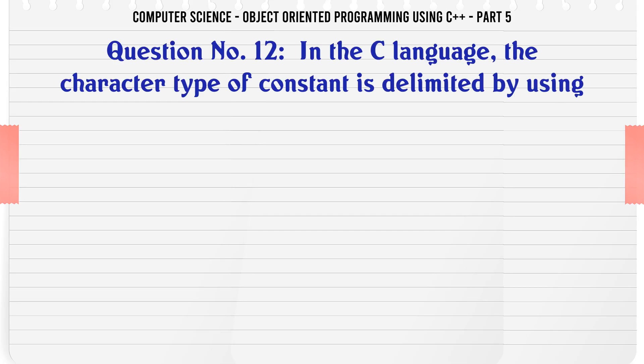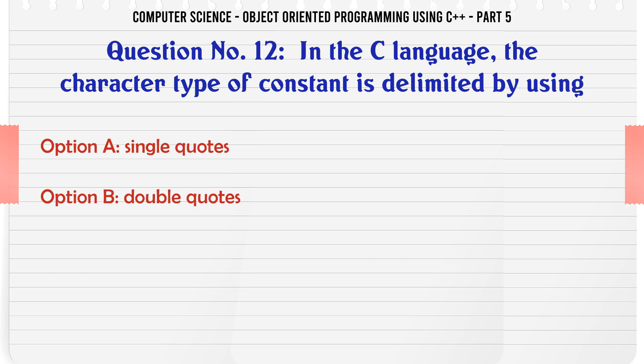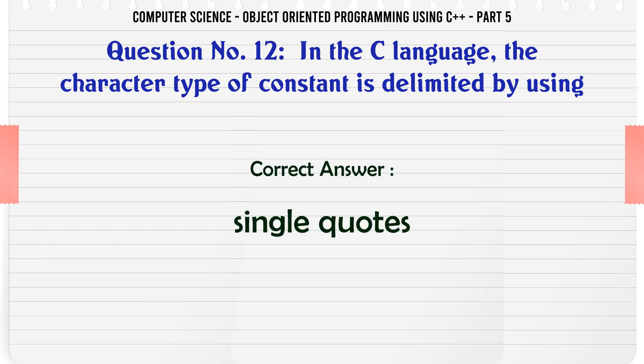In the C language, the character type constant is delimited by using. A. Single quotes. B. Double quotes. C. Parentheses. D. The correct answer is: Single quotes.